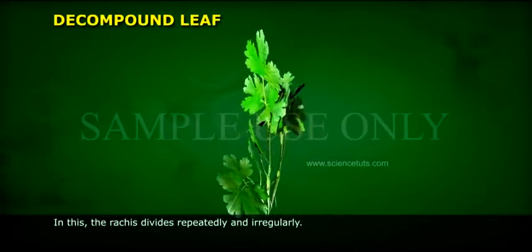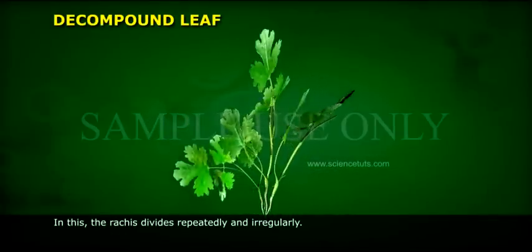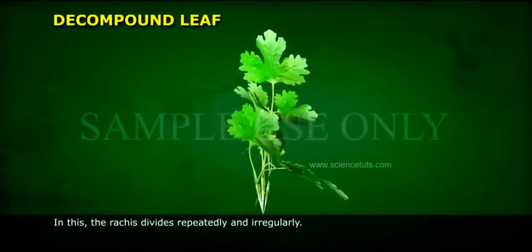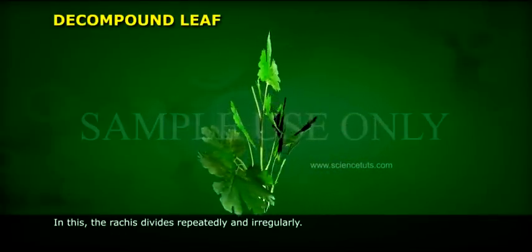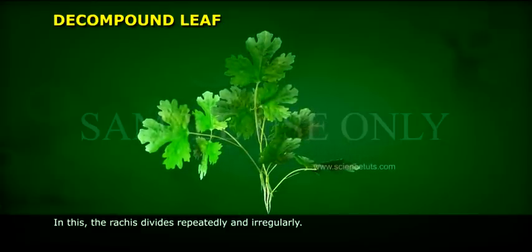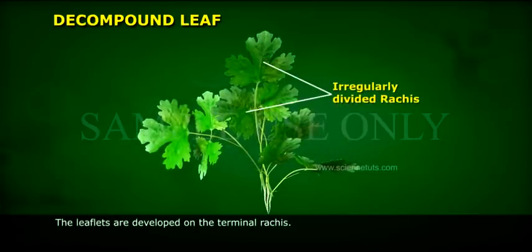Decompound leaf: the rachis divides repeatedly and regularly, and the leaflets are developed on the terminal rachis.